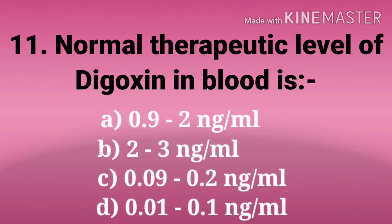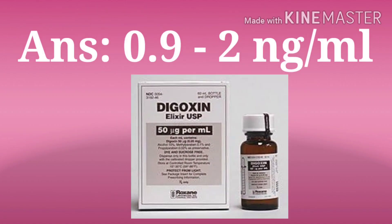11th question: normal therapeutic level of digoxin in blood. The options are 0.9 to 2 ng/mL, 2 to 3 ng/mL, 0.09 to 0.2 ng/mL, 0.01 to 0.1 ng/mL. And the answer is 0.9 to 2 ng/mL. The therapeutic level of digoxin is 0.9 to 2 ng/mL.